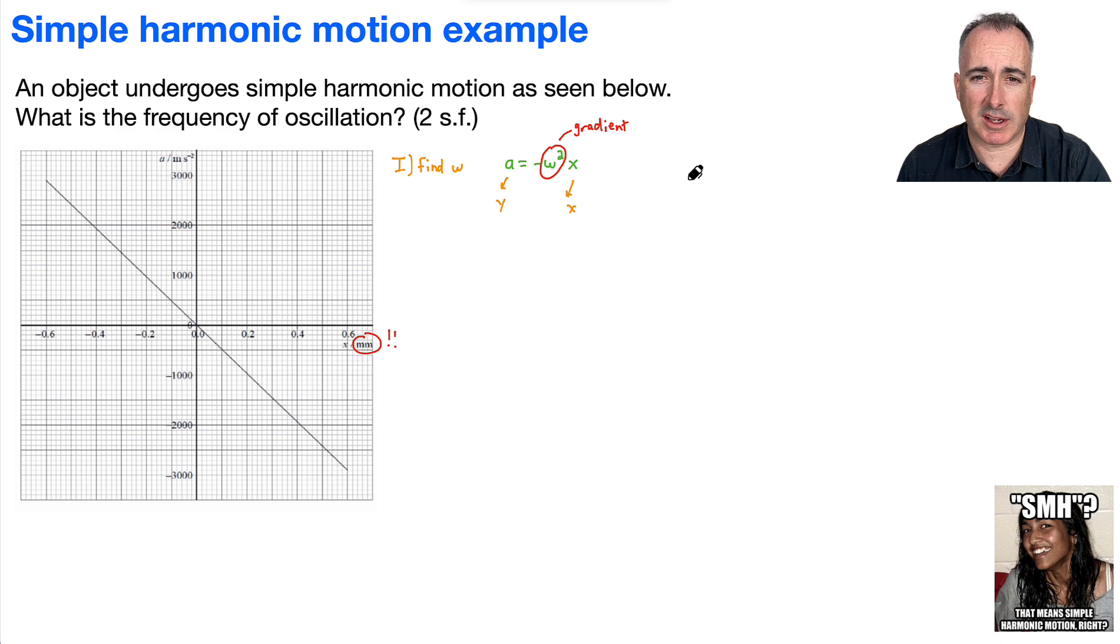But remember, because it's a minus, we're going to take the positive value of it. So I'm going to say then omega is going to equal the square root of the gradient. But I'm going to take the absolute value of it because the gradient is going to be negative, and I don't want to take the square root of a negative. Also because we just care about the actual value. So I need to find this gradient. Remember how to find the gradient of something? Then it's going to be just absolute value of delta y over delta x. That was how much does the y change over how much does the x change?